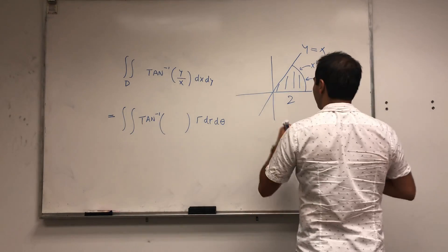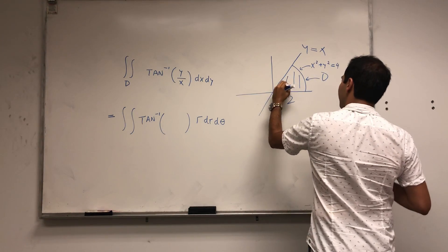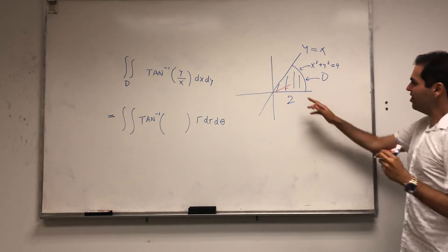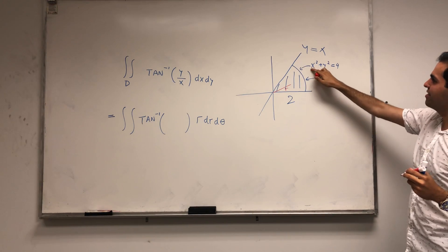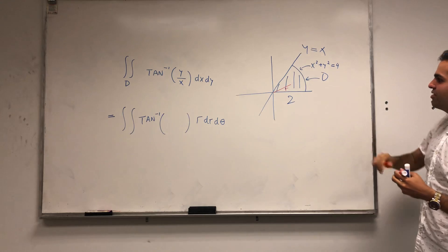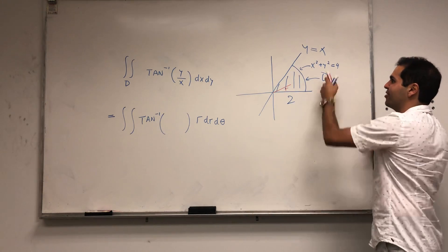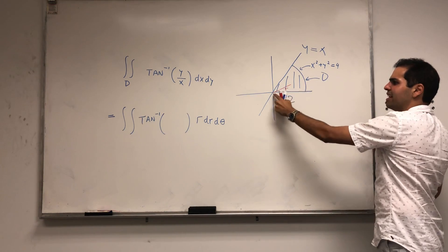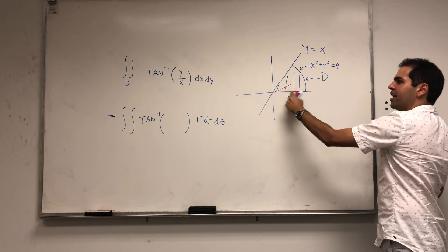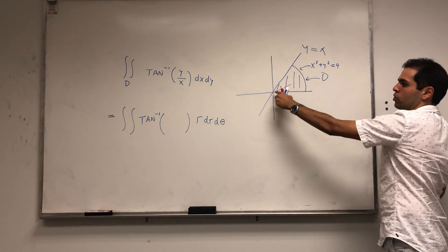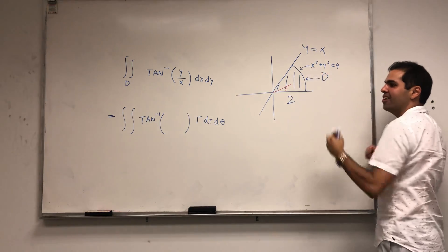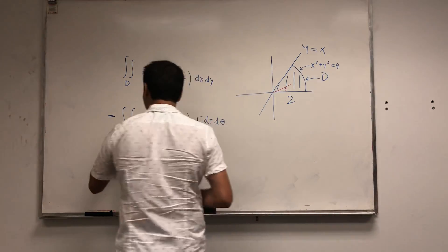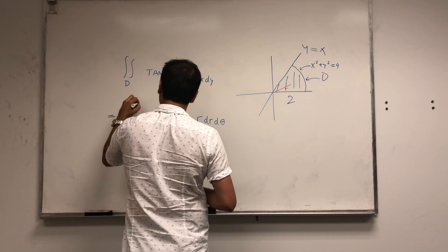So again, r here is the radius something like that, and notice because we're trapped or enclosed in this disc of radius 2, namely x squared plus y squared equals 4, notice that the radius is precisely between 0 and 2. Because the smallest it could be is here at 0, the largest it could be is 2.